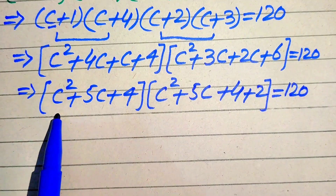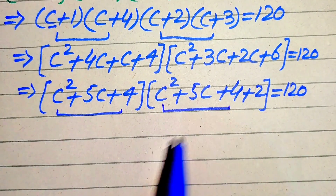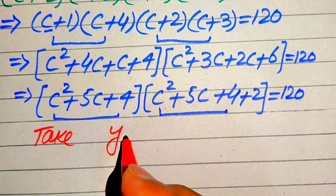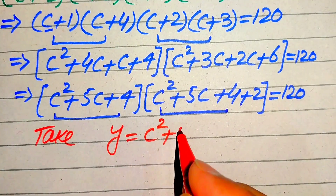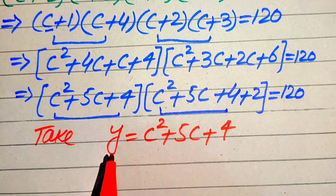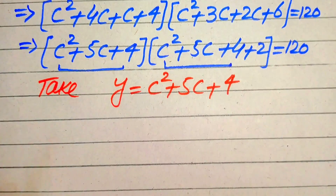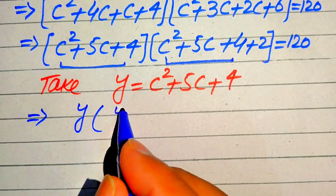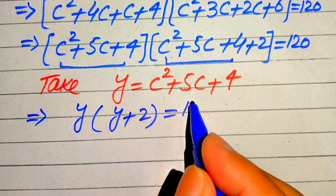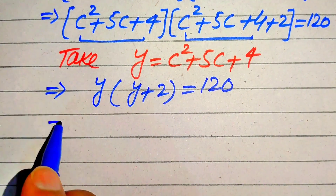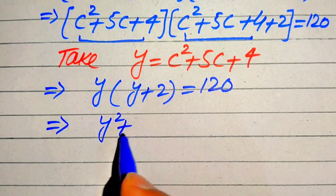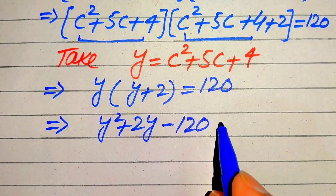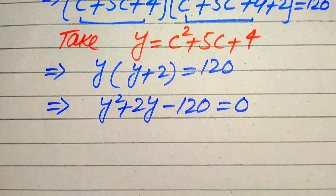We notice both factors share a common expression, so we let Y = C² + 5C + 4. Substituting, the equation becomes Y(Y + 2) = 120, which expands to Y² + 2Y. Moving 120 to the left hand side gives Y² + 2Y − 120 = 0.